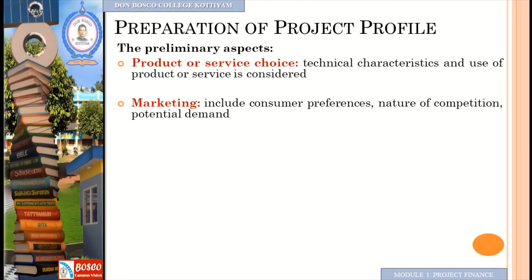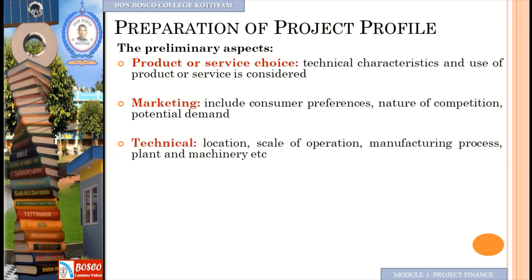The third preliminary aspect is the technical aspect, which covers location, scale of operation, manufacturing process, plant and machinery, and so on. All of these factors are considered in the technical aspect of the project.